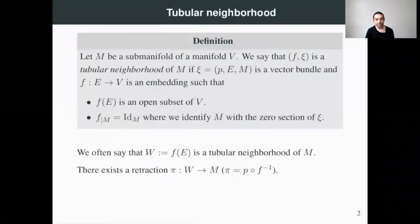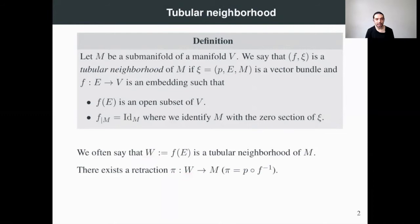Moreover, since there is a projection of our vector bundle from E to M, we get also a projection defined in W to M — a retraction — because the value of any point in M is going to be itself. And this retraction pi is just the composition of the inverse of F with P. So we have a natural retraction from a neighborhood of M to M.